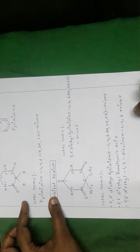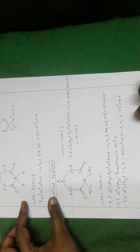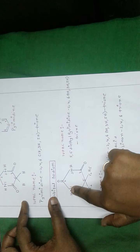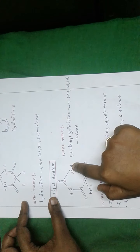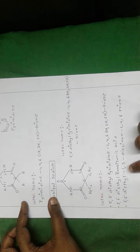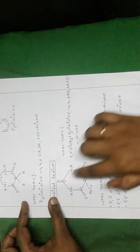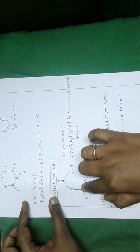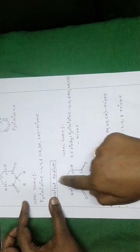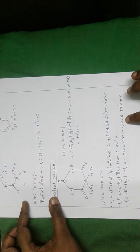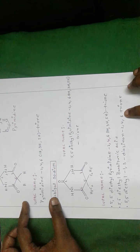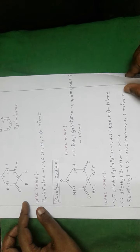'1,3-diazinane' — why diazinane? At the first and third positions it contains two nitrogen atoms, that's why 1,3-diazinane. '2,4,6-trione' — at the second, fourth, and sixth positions it has three ketone groups, that's why 2,4,6-trione.